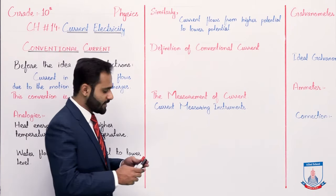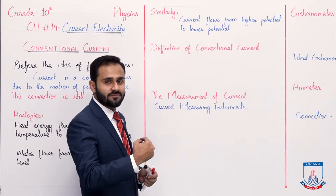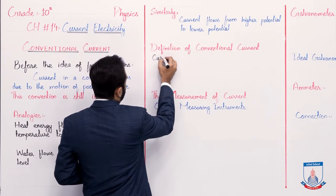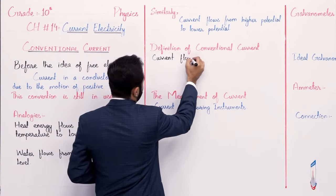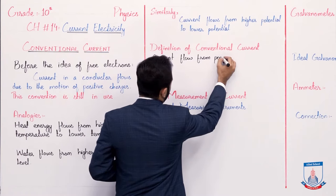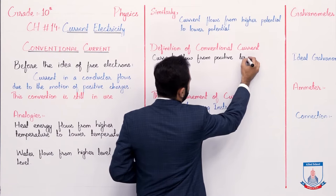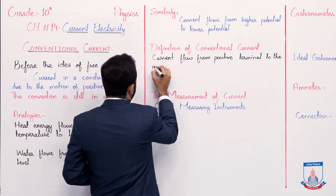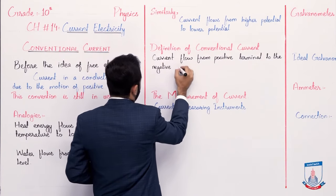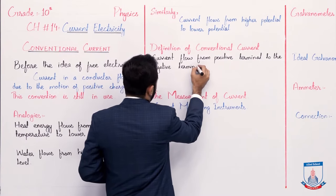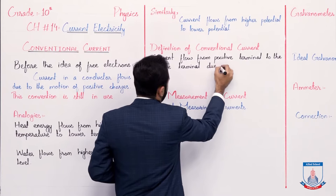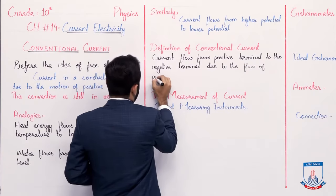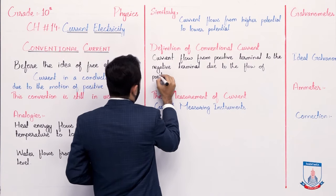The definition of conventional current: as we discussed, current flows from the positive terminal to the negative terminal due to the flow of positive charges.